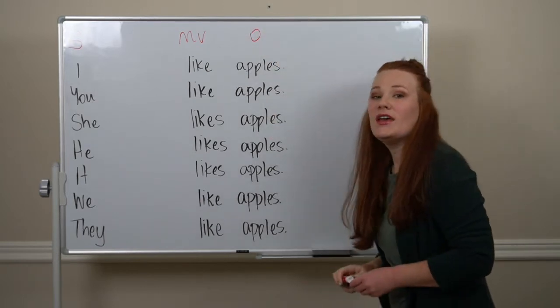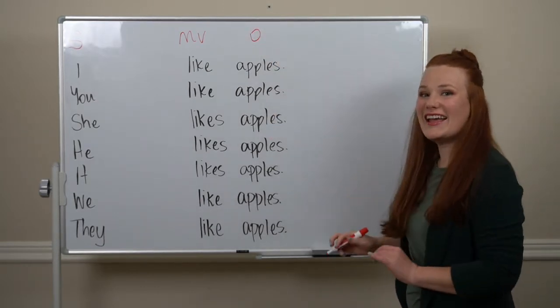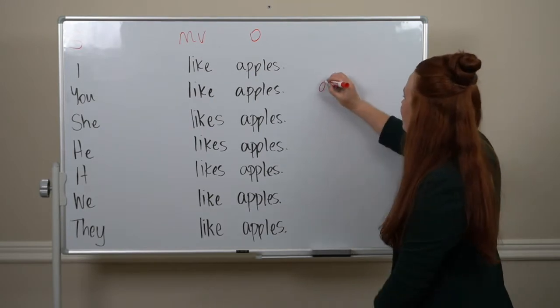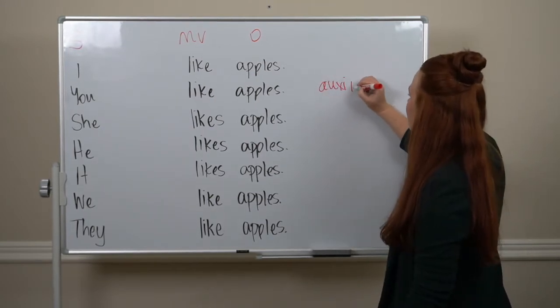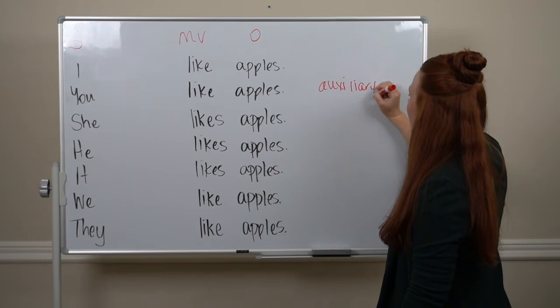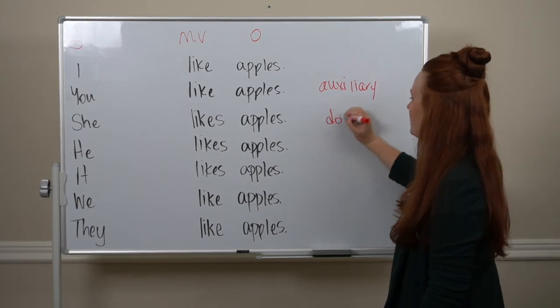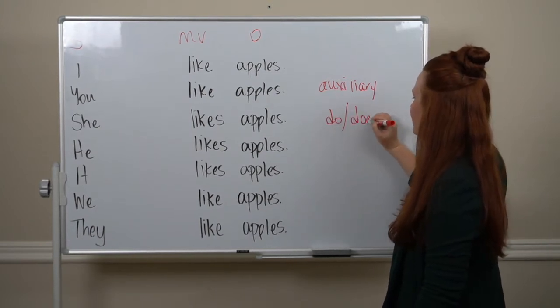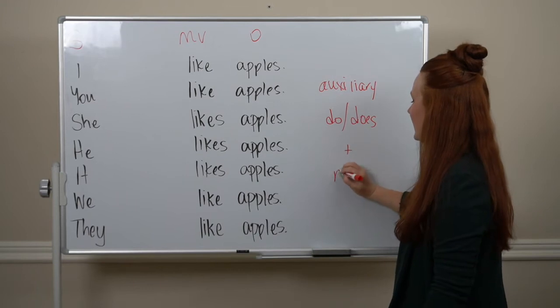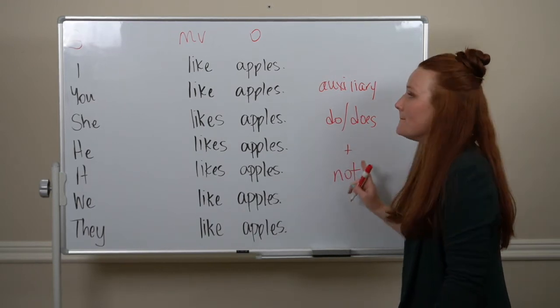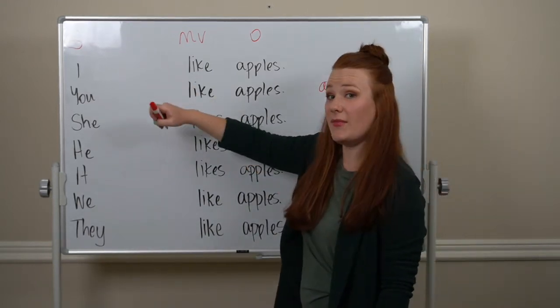To make a sentence negative, we add an auxiliary verb 'do' or 'does' and 'not' before the main verb.